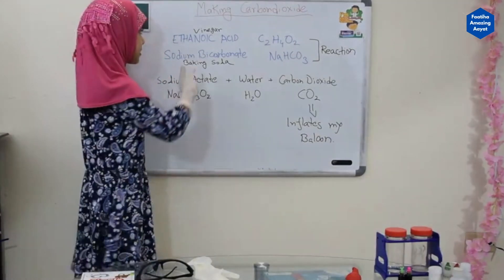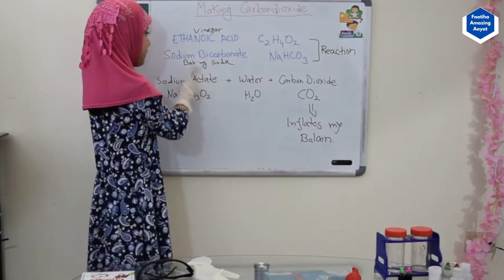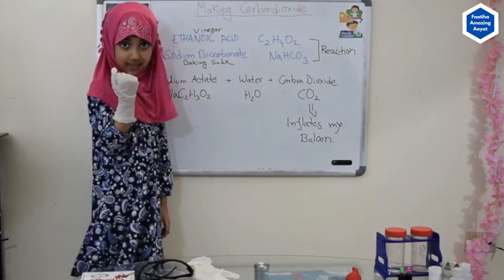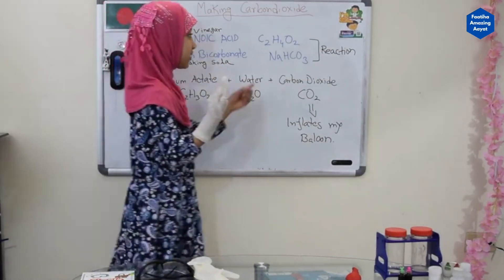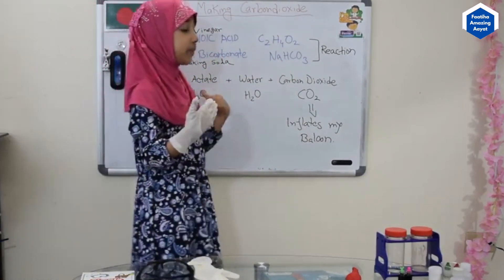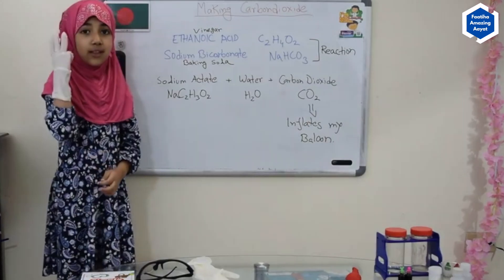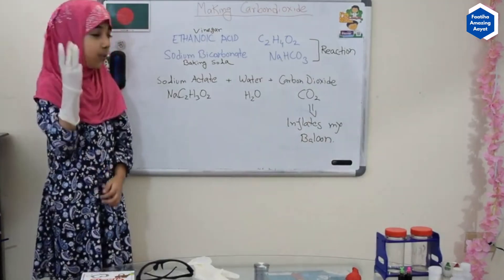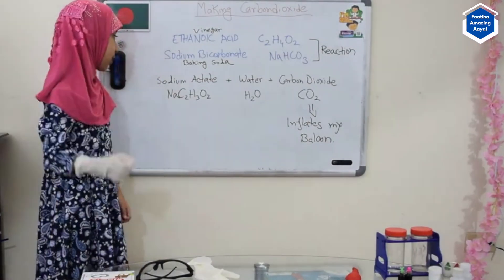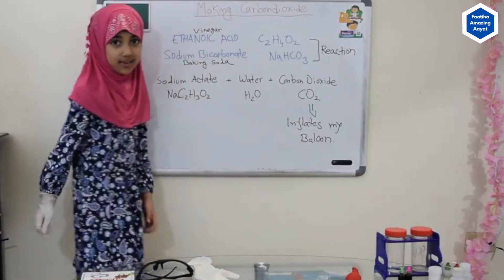The vinegar's name is ethanoic acid and baking soda's name is sodium bicarbonate. And here are the symbols. When they mix and make a reaction, they produce three different things, which are sodium acetate, water, and carbon dioxide.